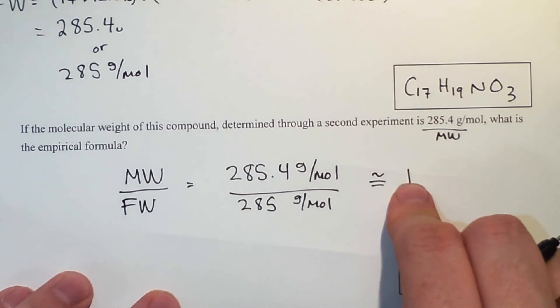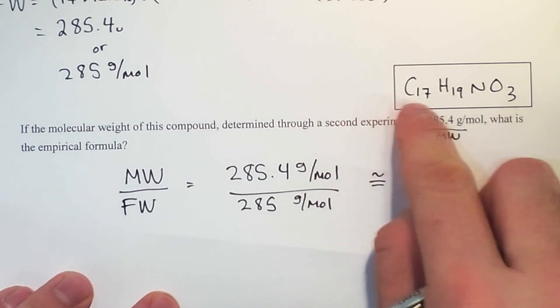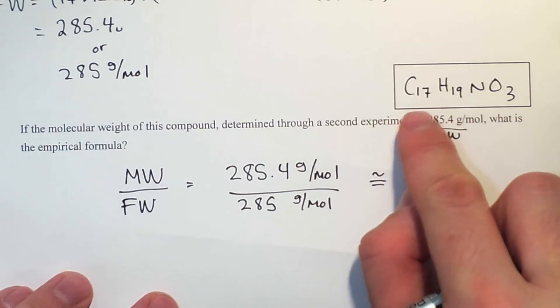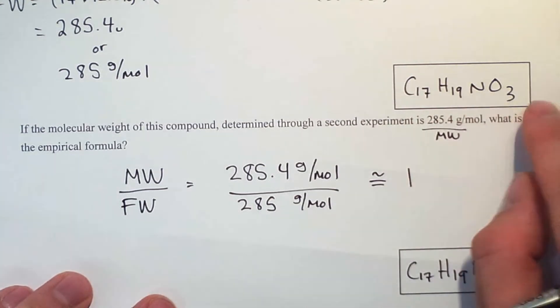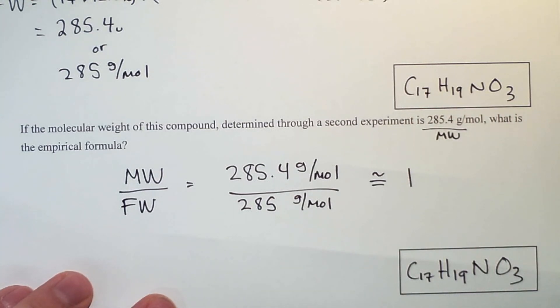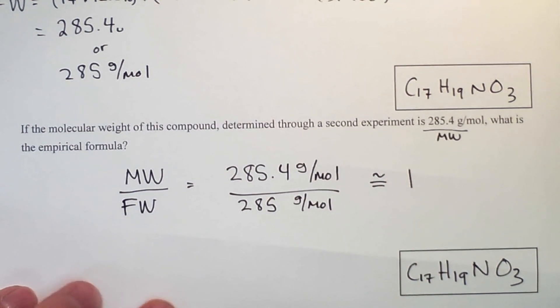If this number wasn't equal to 1, let's say it was equal to 2, I'd have to multiply every subscript by 2. So for example, it would be C34 H38 N2 O6. And that's how we do empirical formulas.